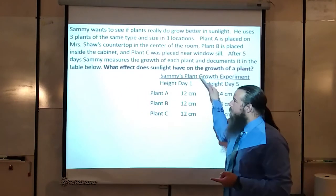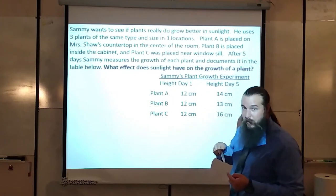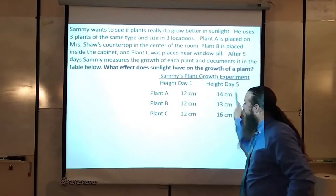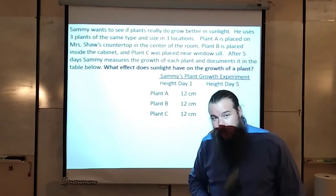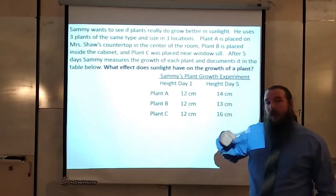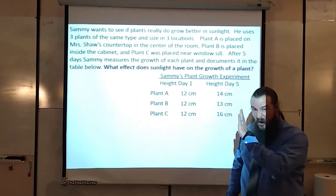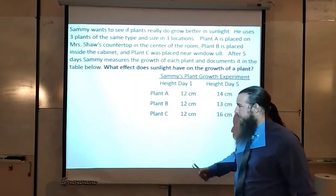So remember, your claim should be saying something about the sun, something about plants. Evidence should have some of these numbers in it, not just random numbers. Definitely not all the numbers. Just pick out the important numbers and then your reasoning. You should probably be name dropping like photosynthesis, stuff like that.